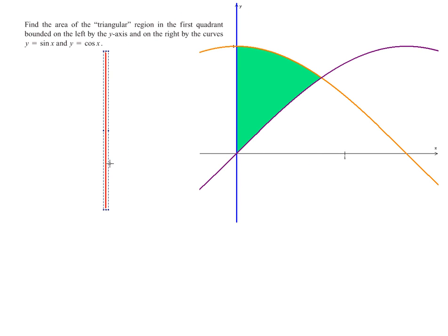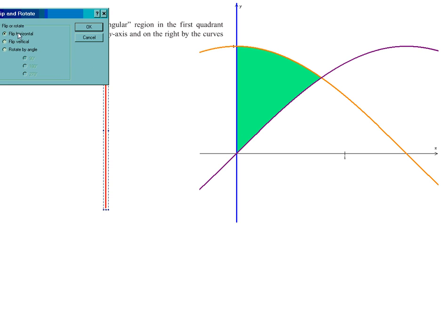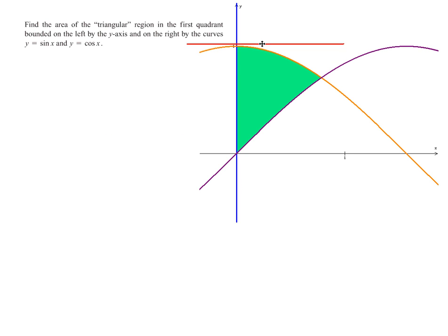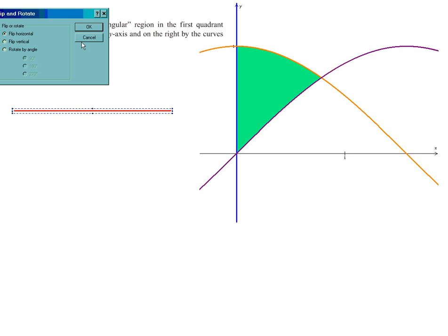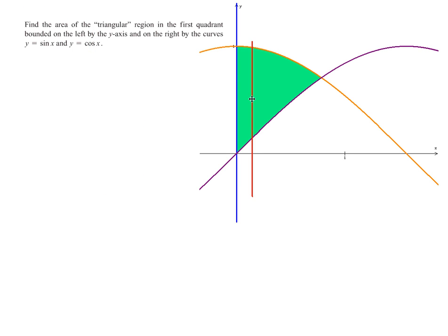Whereas if I rotate this and take a horizontal bar and pass it through the region, notice it's pretty good. I have a left boundary stays the same the whole time, but right here at y equals, I don't know what yet. Actually I do, but that doesn't matter. My right boundary changes. It changes from y equals cosine of x to y equals the sine of x. So anyway, we're going to, of course, do it the easier way rather than the more difficult way and integrate this way.